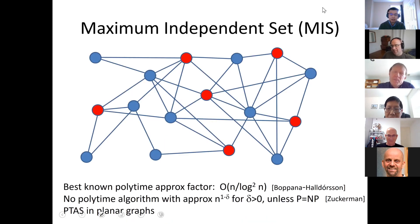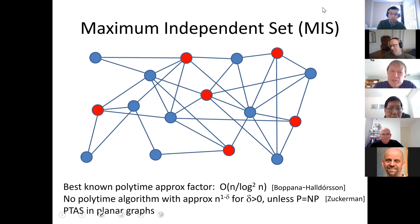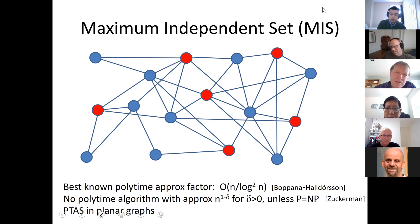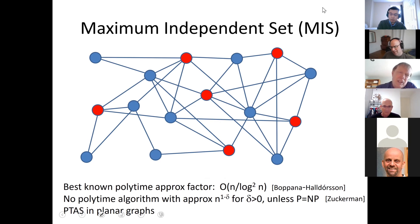The maximum independent set problem is well known. In graphs, it's notoriously hard to approximate — the best known approximation factor achievable in polynomial time is nearly linear, which is really bad. There's good evidence you can't do substantially better unless you have some structure. In planar graphs, which have a lot of structure, PTASs have been known for a long time.